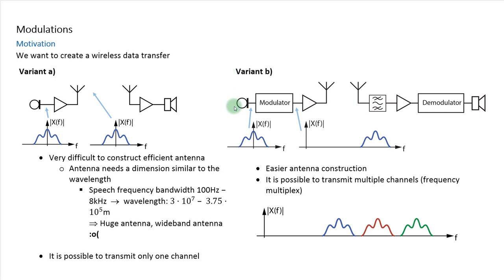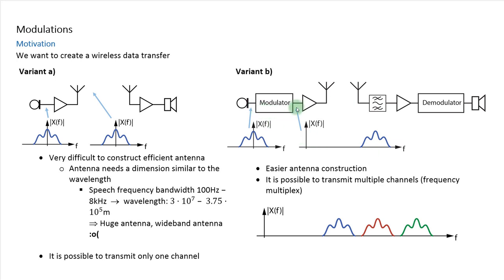The trick is that after you record a signal, you do not transmit it directly, but you encode it so that the spectrum — the frequency content of the signal — is shifted to some higher frequencies. Only after the signal is shifted to these higher frequencies do you transmit it. The process of shifting the frequency content of the signal to higher frequencies is called modulation, and it is performed by the modulator.